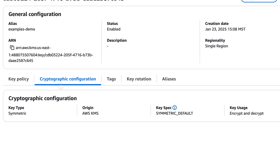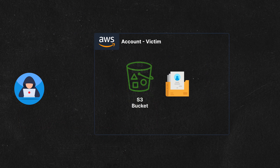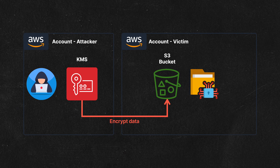AWS customers use KMS all the time for all sorts of encryption, including Amazon S3 data — that's not uncommon at all, and in fact it's a recommended best practice. But the problem is that threat actors figured out they could take KMS and turn it against victims for ransomware purposes. They'll encrypt the data using KMS from their own attacker-controlled account, and then prevent decryption access to the victim unless they pay.